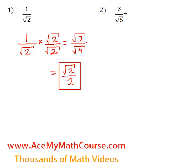Okay, how about 3 over the square root of 5? How can we rationalize the denominator? Well, well, well. We're just going to multiply it. The square root of 5 by the square root of 5.